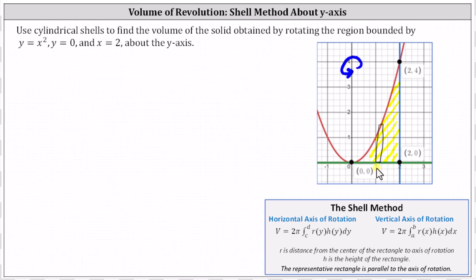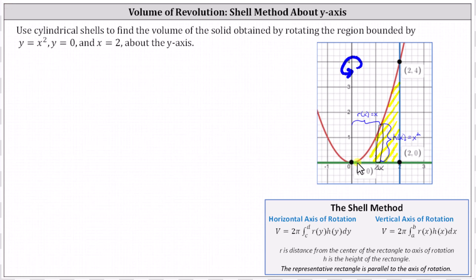Notice the thickness of the rectangle is delta x, which is why when using the shell method with a vertical axis of rotation, we integrate with respect to x. The volume equals two pi times the integral from a to b of r of x times h of x dx, where r of x is the distance from the center of the rectangle to the axis of rotation — in our case this horizontal distance, which is simply equal to x. And h of x is the height of the rectangle, determined by the parabola y equals x squared, so h of x equals x squared. The limits of integration will be from x equals zero to x equals two along the x-axis.